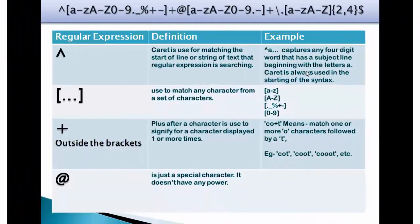This email expression starts from a caret. This symbol of caret is just above 6 key in a standard qwerty keyboard. Caret is used for matching the start of a line or string of a text that regular expression is searching. For example, caret a with 4 dots captures any 4 digits word that is a subject line beginning with the letters a. Caret is always used in the starting of the syntax. These three dots or periods with square brackets is used to match any character from a set of characters. We have already spoken about this.